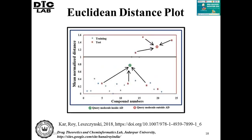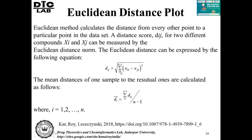The Euclidean distance plot uses normalized Euclidean distance values to set a threshold for training set compounds. If test compounds are within that threshold, they are within the domain; otherwise they are outside the domain. Euclidean distance calculates the distance of a particular point from every other point in the dataset. The mean distance of one sample to the remaining ones can be calculated, and we need to use standardized values of the Euclidean distance measures.